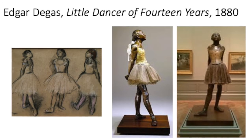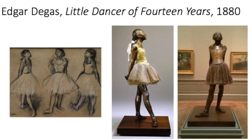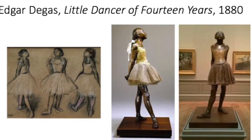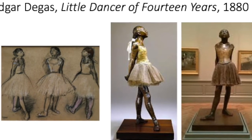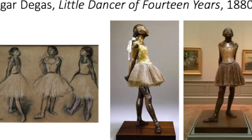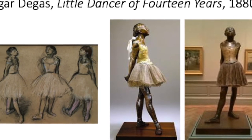These sketches and sculpture were created by an artist named Edgar Degas. He titled the sculpture Little Dancer of 14 Years and he created it in 1880. Look at the similarities between his sketches and his finished sculpture.